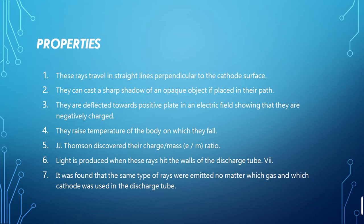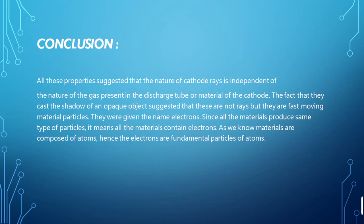There is no effect on the production of cathode rays regardless of whichever gas is used in the discharge tube. All these properties suggested that the nature of cathode rays is independent of the nature of the gas present in the discharge tube or the material of the cathode. The fact that they caused the shadow of an opaque object suggested that these are not rays but fast-moving particles. Due to their negative charge, they were identified as electrons and were literally named electrons from the cathode rays.